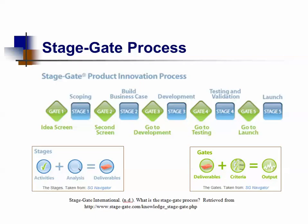Normally business analysts do this. Stage two is a detailed investigation involving primary research both in the market and technical areas, leading to a business case that includes product and project definition, justification, and the proposed plan for development. Stage three is the development — the actual detailed design and development of the new product, and the design of operation or production processes required for eventual full-scale production.